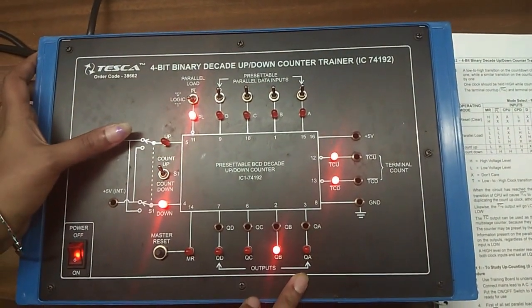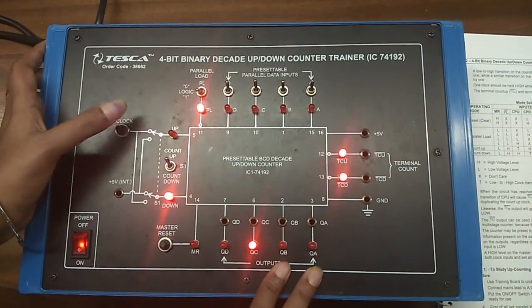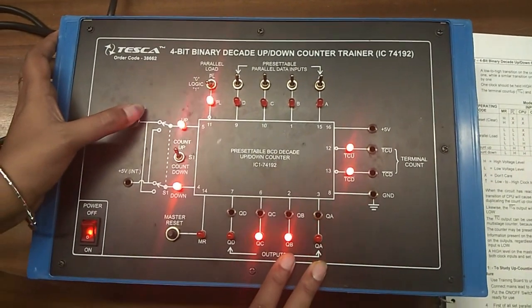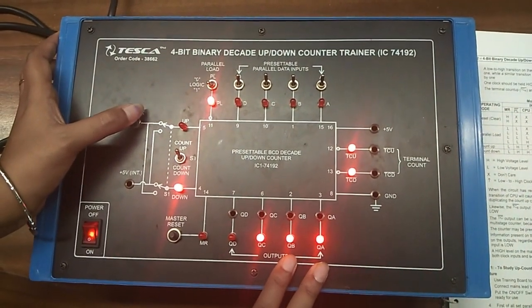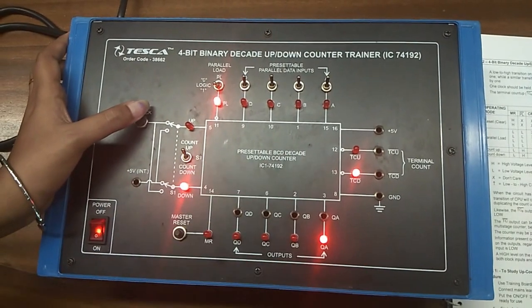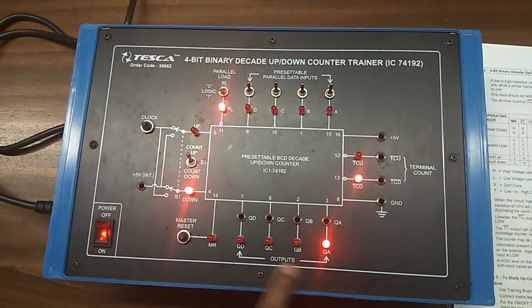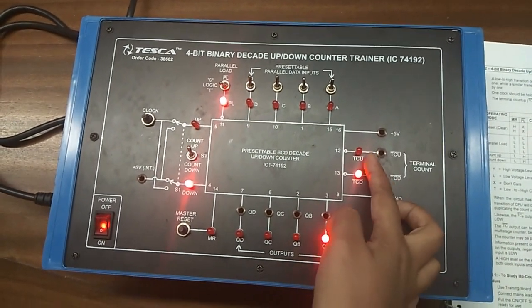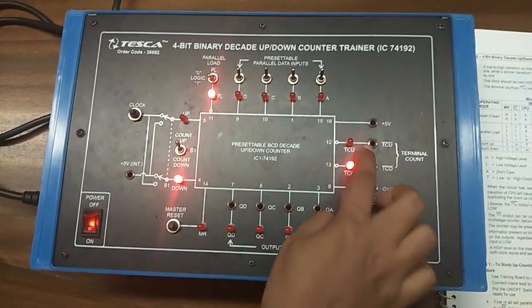Like this: 1, 2, 3, 4, 5, 6, 7, 8, 9. You can see as the counter has reached 9, this LED has stopped glowing.